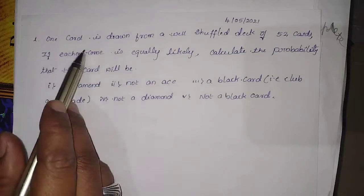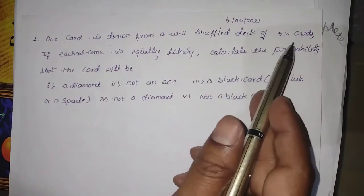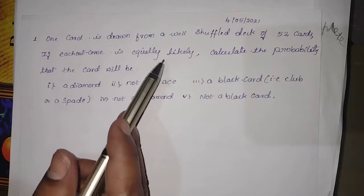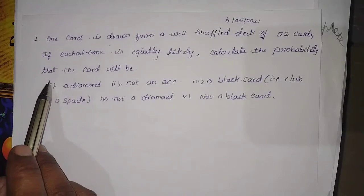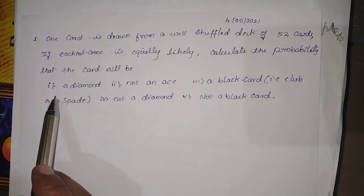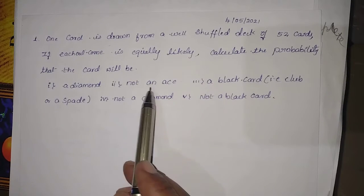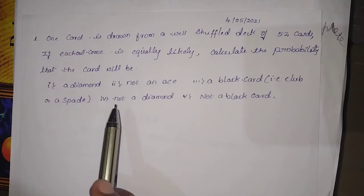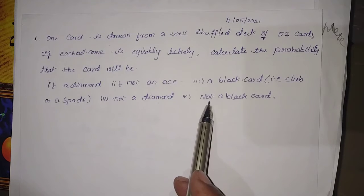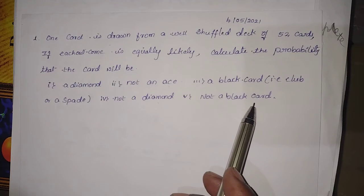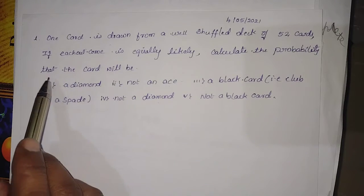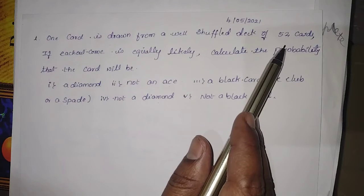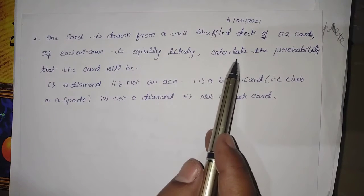Problem one: one card is drawn from a well-shuffled deck of 52 cards. If each outcome is equally likely, calculate the probability that the card will be: first, a diamond; second, not an ace; third, a black card (that is, a club or a spade); fourth, not a diamond; and fifth, not a black card.